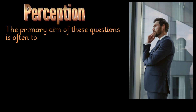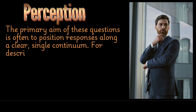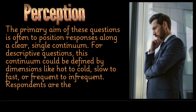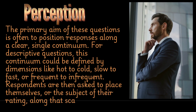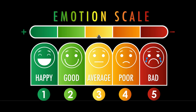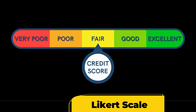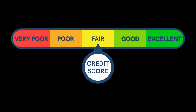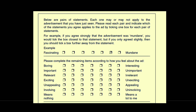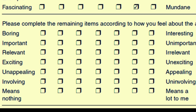The primary aim of perception questions is often to position responses along a clear, single continuum. For descriptive questions, this continuum could be defined by dimensions like hot to cold, slow to fast, or frequent to infrequent. Respondents are then asked to place themselves along that scale. Likert scale questions are widely used in questionnaires to measure respondents' attitudes, opinions, or perceptions on a given subject. These questions present a statement and ask individuals to indicate their level of agreement, typically on a five- or seven-point scale ranging from strong approval to strong disapproval — providing insights into varying degrees of sentiment rather than simple binary yes/no responses. A semantic differential scale provides pairs of opposite statements and one is expected to choose on a continuum, generally on a five- or seven-point scale.